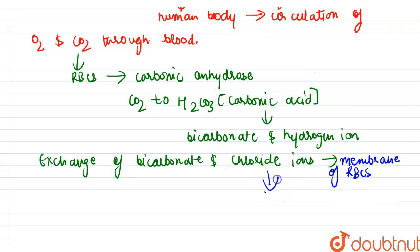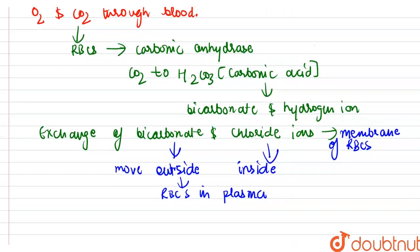The chloride ions move inside, and the bicarbonate ions move outside the RBCs in the blood plasma.